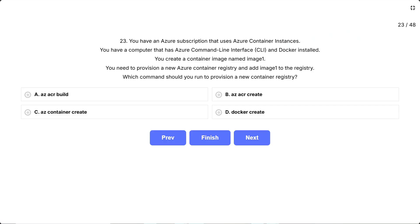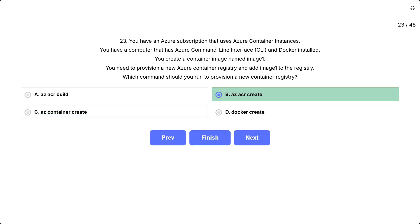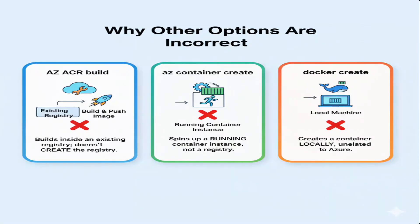Correct answer: az acr create. The az acr create command provisions a new Azure container registry, letting you specify resource group, registry name, SKU — basic, standard, or premium — and other settings. Once the registry is created, you can log in and push image 1 there. Why the other options are incorrect: az acr build builds or pushes an image inside an existing registry — it doesn't create the registry itself. az container create spins up a running container instance, not a registry. docker create creates a container locally on your machine, unrelated to Azure registry creation.